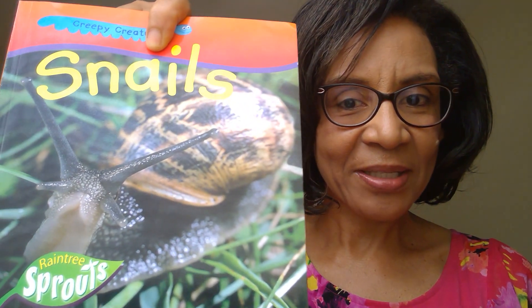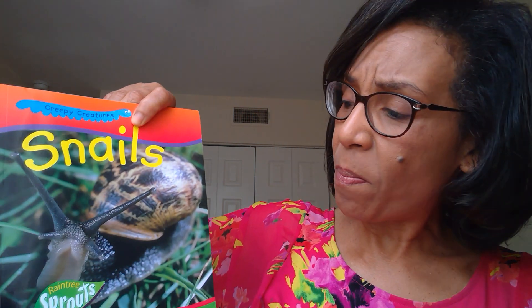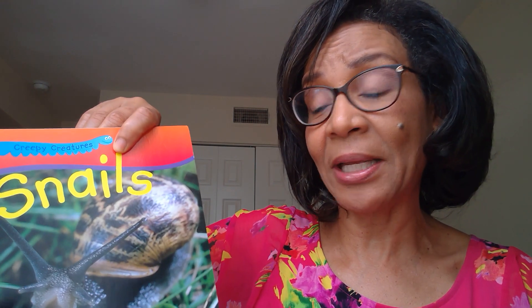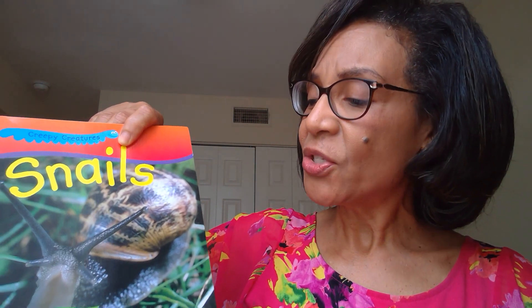Here's the book that we will be reading today — it's called Snails, see right there — and I want you to pay attention to the text features that are in this book. Text features help you with your comprehension, which means they help you understand your books better. When you see captions, big words, pictures, bolded words, a glossary, or an index, those are all called text features.